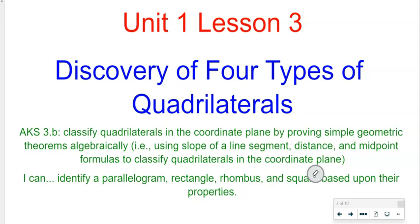In this lesson today, we're going to discover the four types of quadrilaterals, and we're going to classify those quadrilaterals as either a rectangle, rhombus, a square, or a parallelogram based on their properties.